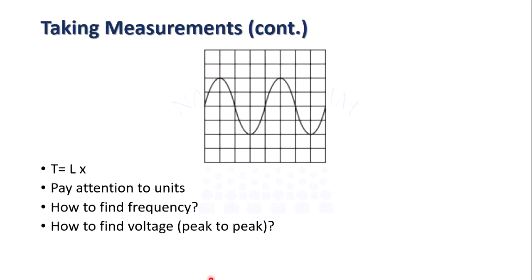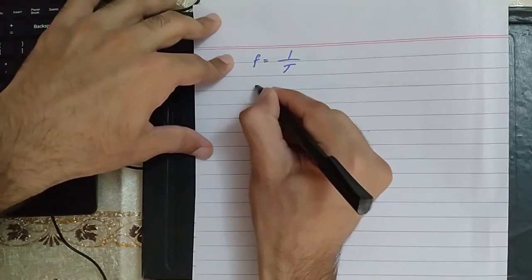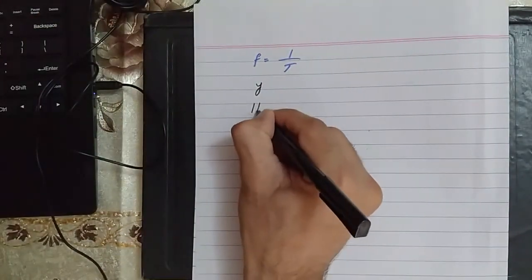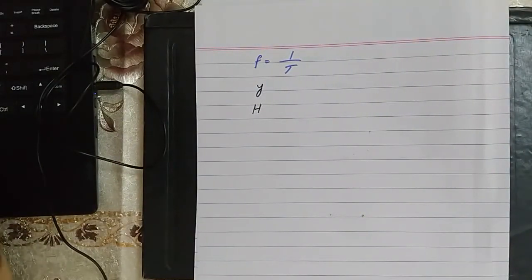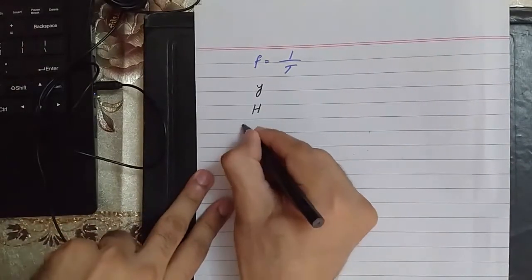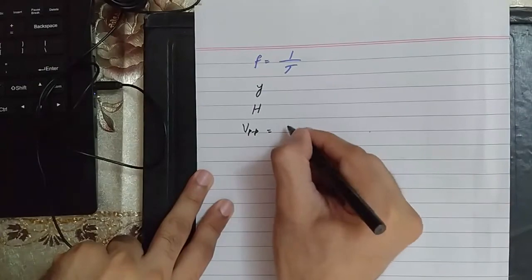The next thing is how to find the peak-to-peak voltage — the voltage from crest to trough. It is very similar to finding time period. If y is the y-plate sensitivity and h is the number of divisions from peak to peak of the waveform, then the peak-to-peak voltage is equal to h × y.